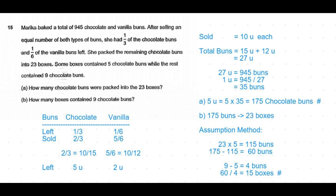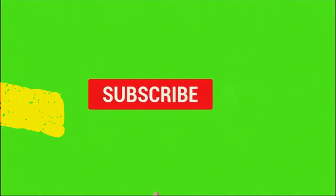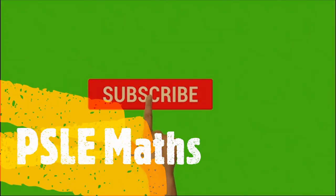Which means nine minus five is four buns. So to increase the total number of buns from 115 to 175, we need to divide 60 divided by four, which is equal to 15 boxes. So the number of boxes containing nine chocolate buns is 15.